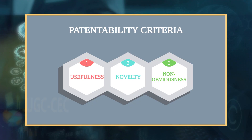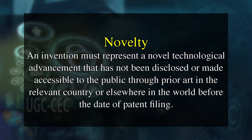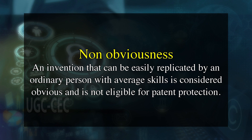The patentability of any invention needs to fulfill certain criteria. 1. Usefulness: An invention must have industrial applicability or be applied for a practical purpose. 2. Novelty: An invention must represent a novel technological advancement that has not been disclosed or made accessible to the public through prior art in the relevant country or anywhere else in the world before the date of patent filing. 3. Non-obviousness: An invention that can be easily replicated by an ordinary person with average skills is considered obvious and is not eligible for patent protection. Therefore, for an invention to be patentable, it must not be obvious.